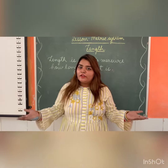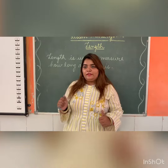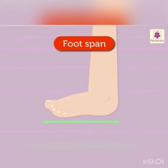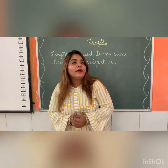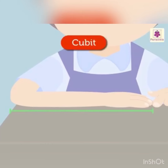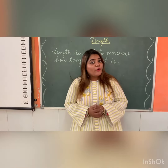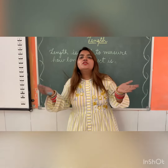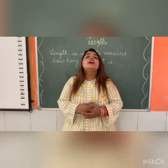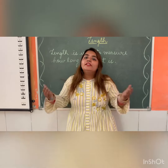Foot span is the distance from the tip of the toe to the heel of the foot. Cubit is the length from the elbow to the tip of the fingers. Now you can measure length using your body parts — have fun and enjoy the activity. Thank you.